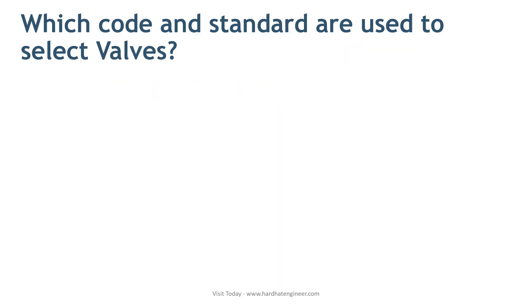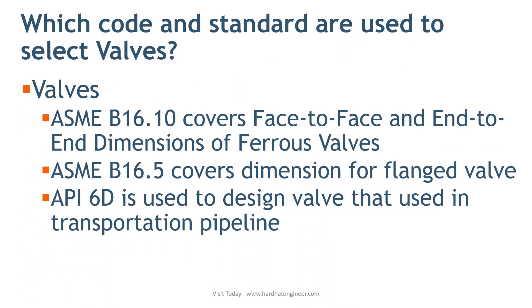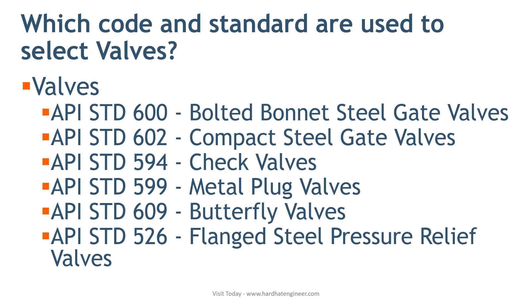Next is valves. Different types of valves are used in process plants, so there are many standards for valves. I have covered the most commonly used standards that an interviewer may ask you. ASME B16.10 covers face-to-face and end-to-end dimensions of ferrous valves. ASME B16.5 covers dimensions for flanged valves. API 600 is used for bolted bonnet steel gate valves for petroleum and natural gas industries. API standard 602 is used to design compact steel gate valves with flanged, threaded, welding, and extended body ends.